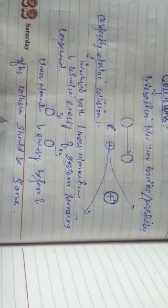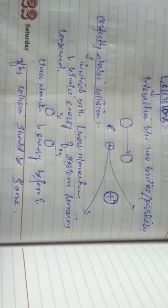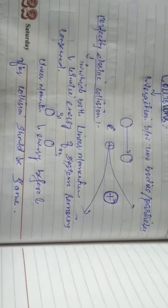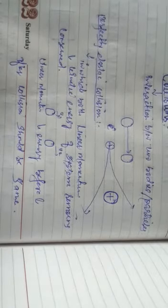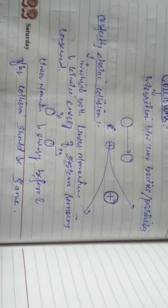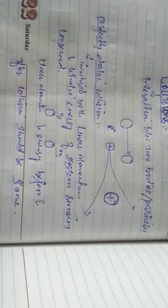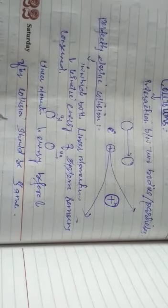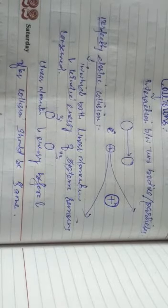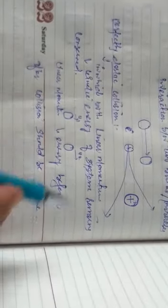Perfectly elastic collisions are very rare, but examples include two atomic particles or two billiard balls. If you have a ball that is dropped from a height and it rebounds to the same height, then the collision is elastic. So if a ball bounces back to the same height from which it was dropped, the collision is called elastic.